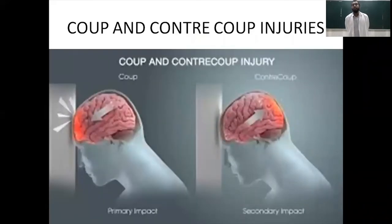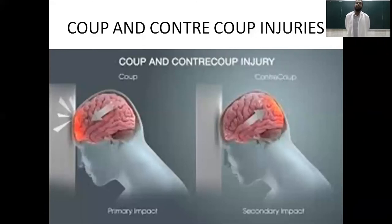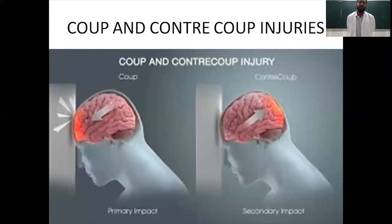In coup and contrecoup injuries, the initial assault may be on one end but the injury may also be found on the opposite end. This is because the brain is held loosely in the CSF — it floats inside the head. When acceleration or deceleration due to impact is too high, the brain is first pushed towards one side and then pushed back against the skull again. Clinically, it is important to assess both the site of primary and secondary impact.